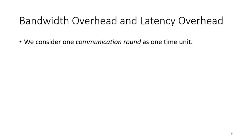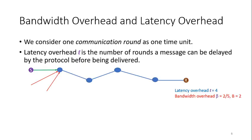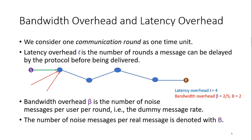Next, we define bandwidth overhead and latency overhead. We measure time in communication rounds, and latency overhead L is the number of rounds a message can be delayed by the protocol before being delivered. For example, if S sends a message to R through 4 routing nodes, there are 5 total rounds and 4 additional rounds, so latency overhead L equals 4. The protocol adds 2 noise messages marked with red arrows, so bandwidth overhead beta is the number of noise messages per user per round — the dummy message rate, which is 2 over 5 in this case. We also denote with B the number of noise messages per real message; here B is 2.